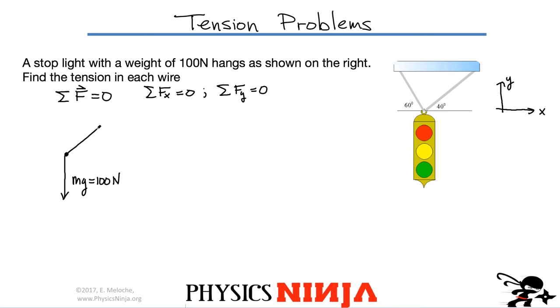We're going to call this tension T1. I know the angle, let's call this theta1. Now there's also another wire on the other side. We're going to call this tension T2. And the angle that it makes with respect to the horizontal is angle theta2.